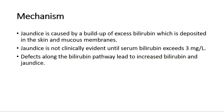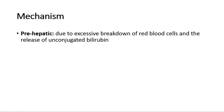For its mechanism, jaundice is caused by a buildup of excess bilirubin which is deposited in the skin and mucous membranes. Jaundice is not clinically evident until serum bilirubin exceeds 3 mg per deciliter. Defects along the bilirubin pathway lead to increased bilirubin and jaundice. For pre-hepatic jaundice, it is due to excessive breakdown of red blood cells and the release of unconjugated bilirubin, causing jaundice due to unconjugated hyperbilirubinemia.